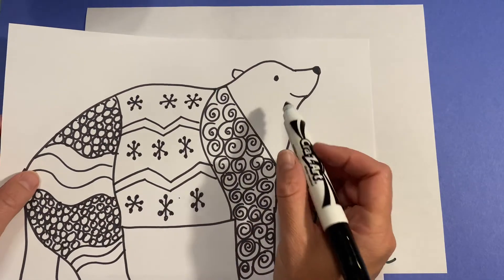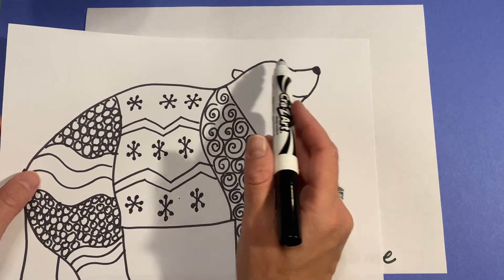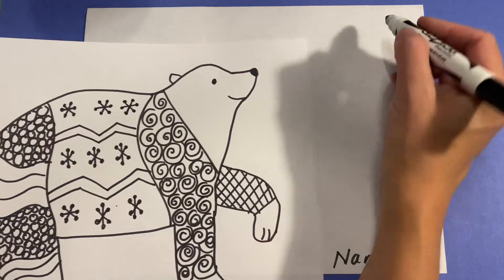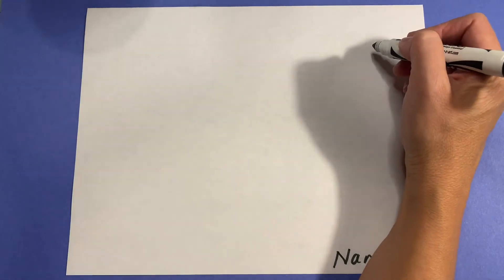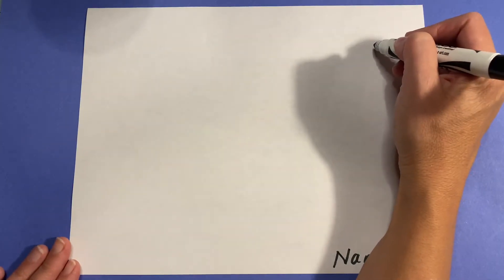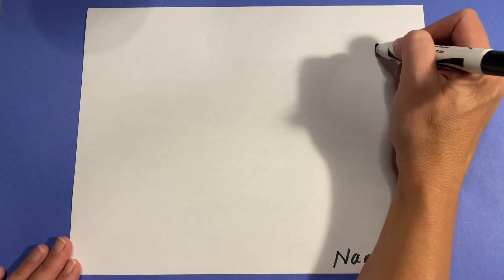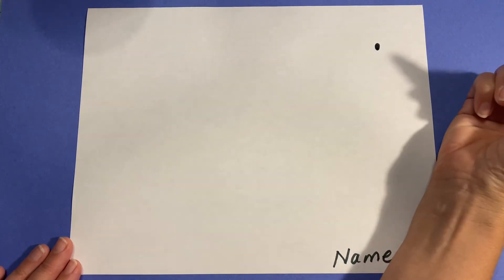The first thing that you're going to want to do on your paper is write your name in the bottom right corner. Then what we're going to do is get started drawing our bear from the nose and face. I'm going to start up here so I have plenty of room. I'll draw kind of like a circle or oval for his nose.